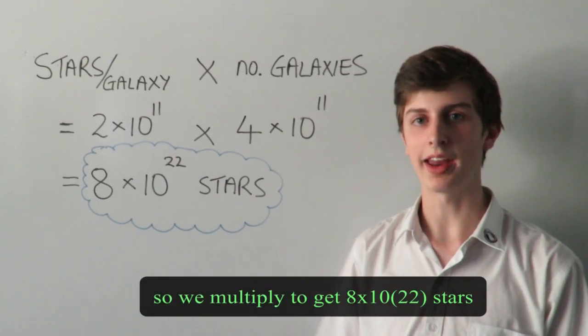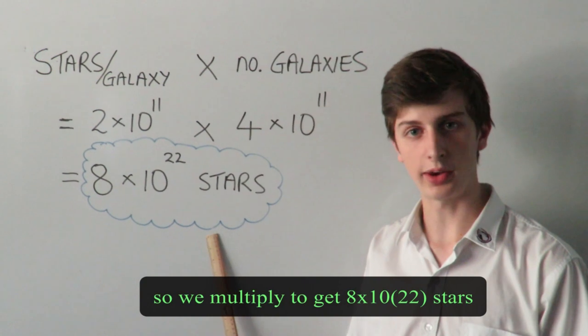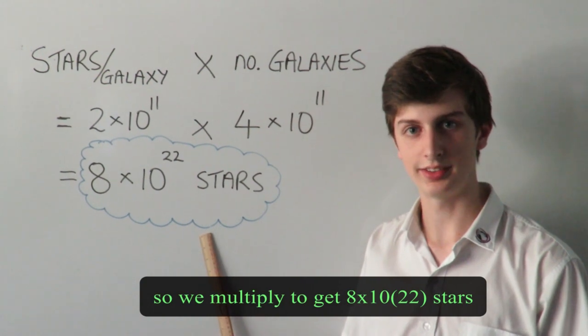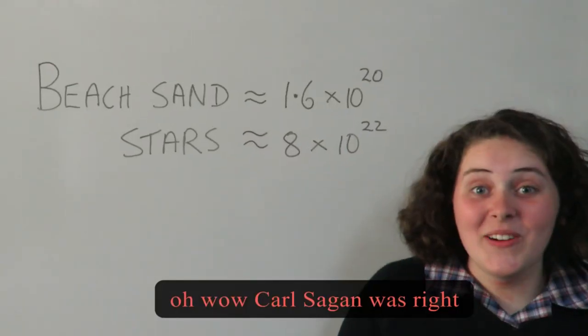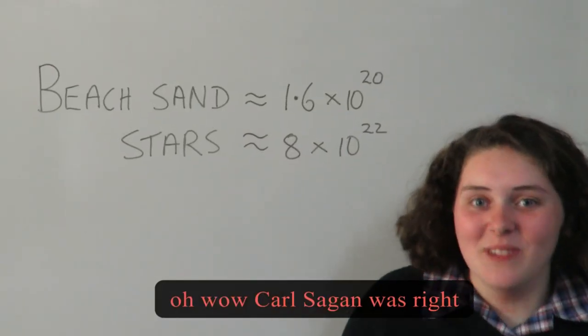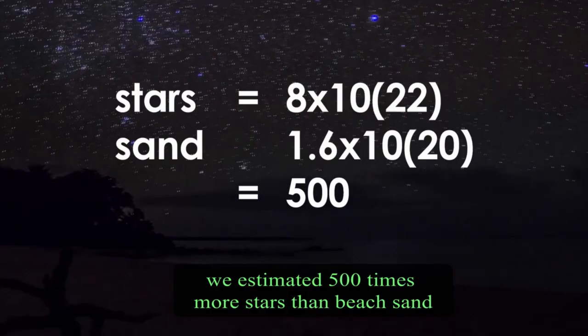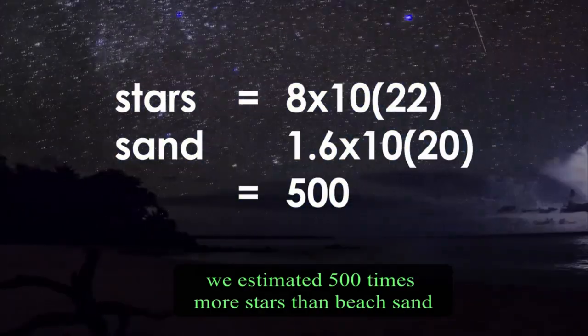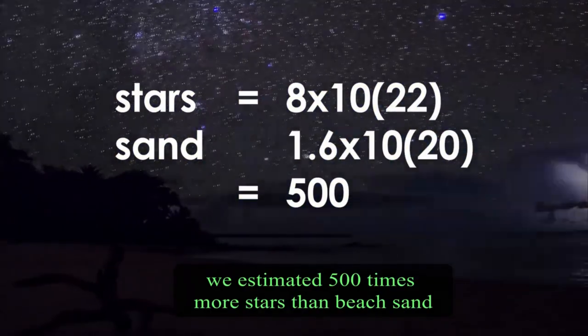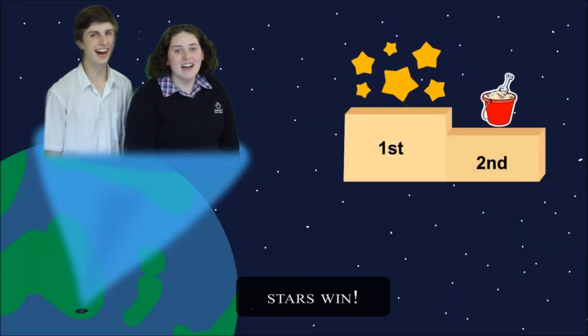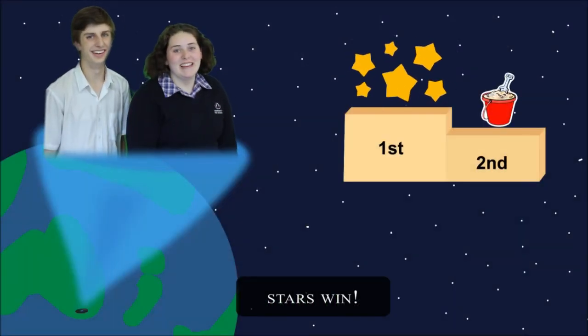We multiply to get about 8 by 10 to the 22nd stars. Wow — Carl Sagan was right! We estimated 500 times more stars than beach sand. Stars win!